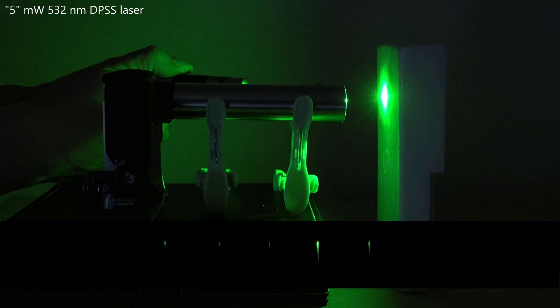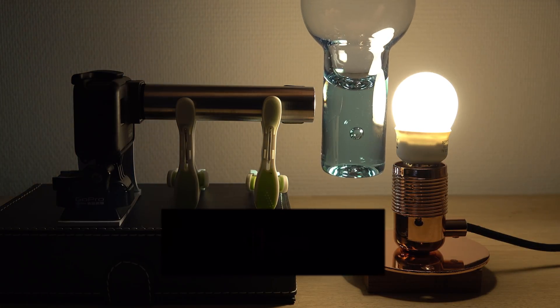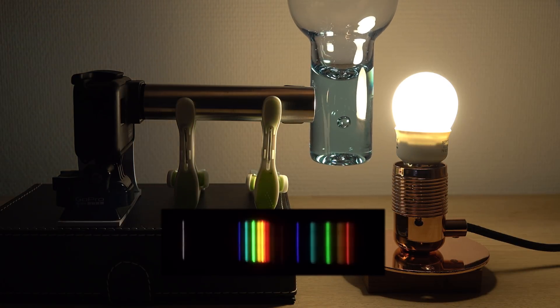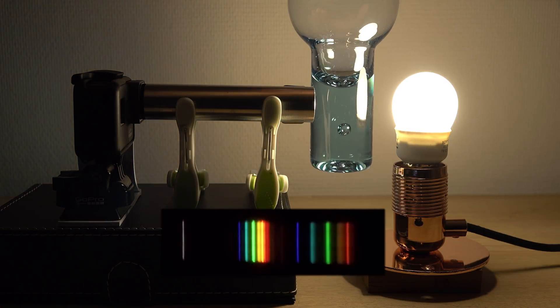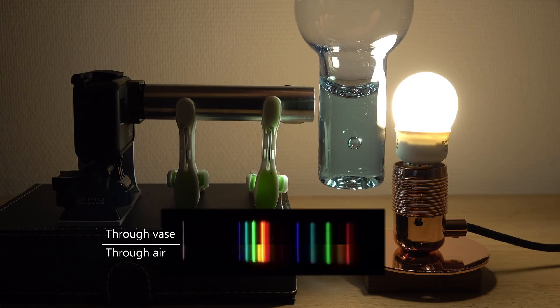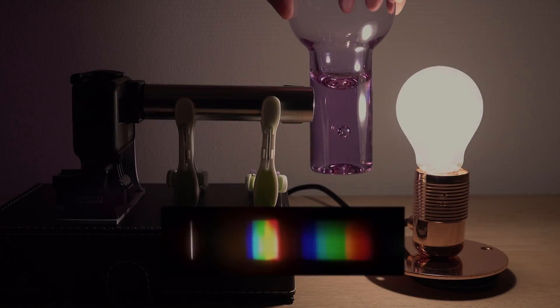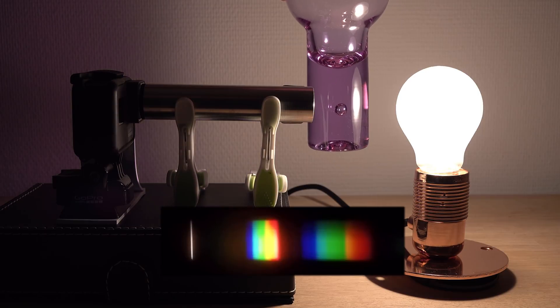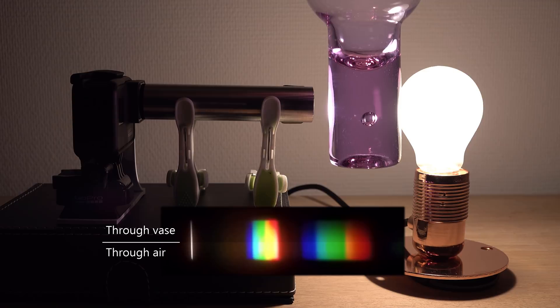Now back to the fluorescent bulb. If I put the vase between the bulb and spectroscope we can see what colors the vase filters out. Do you see that? The yellow completely disappears. The remaining spectrum is what our eye sees as light blue. With the incandescent light we can tell that some green is also absorbed. But the remaining broader spectrum is what our eye sees as violet or lavender.